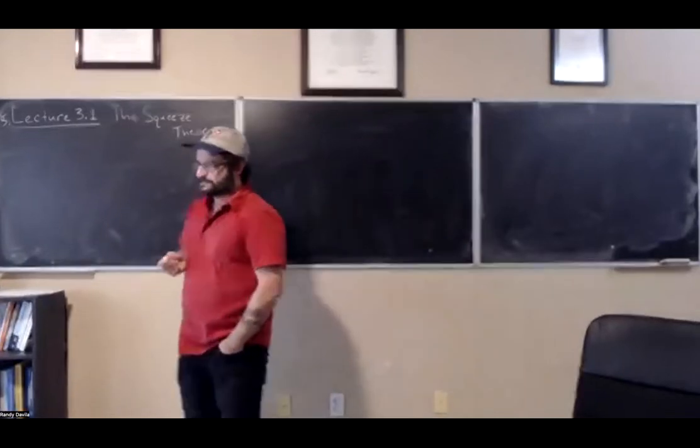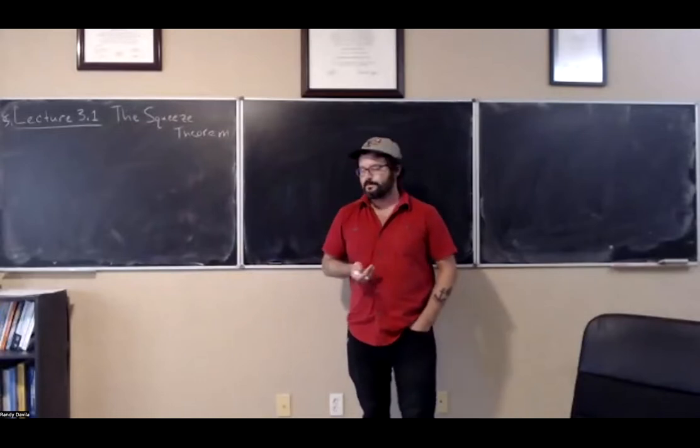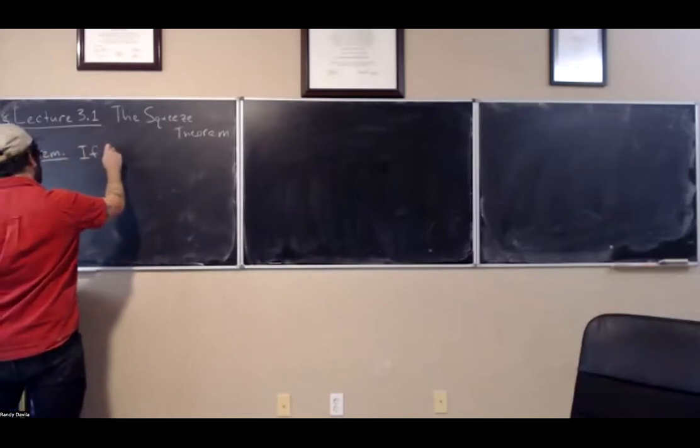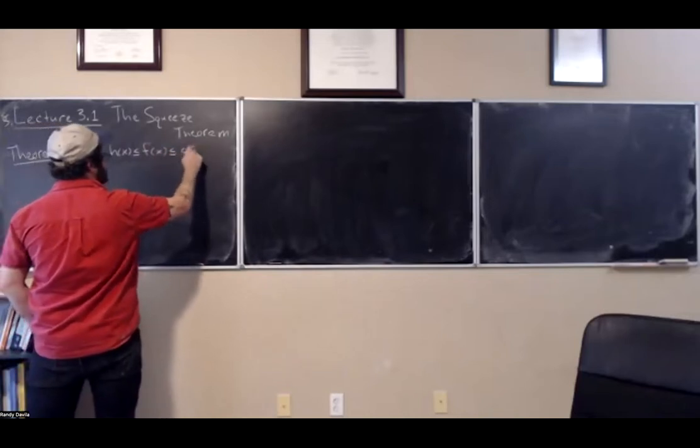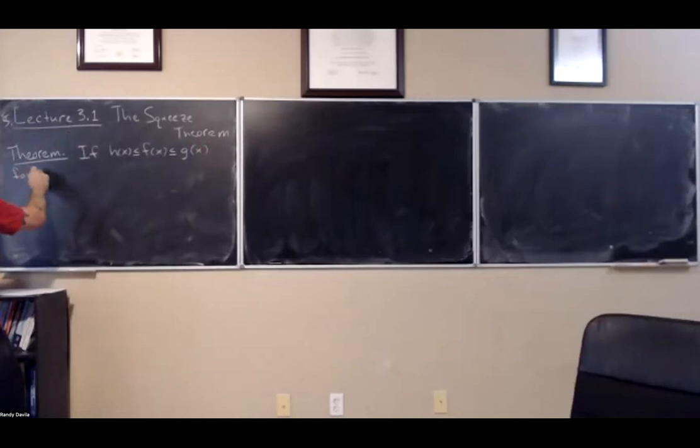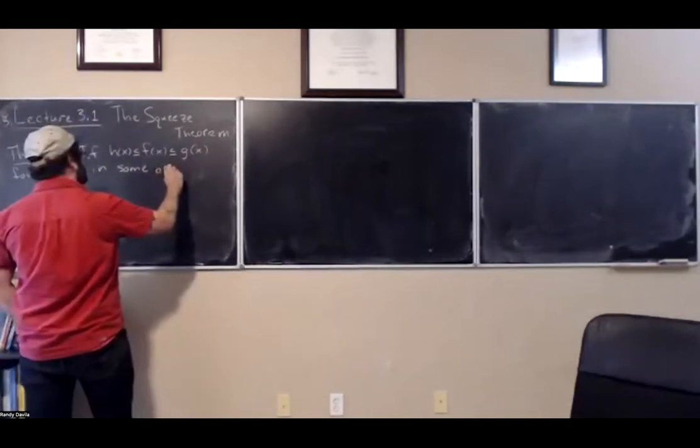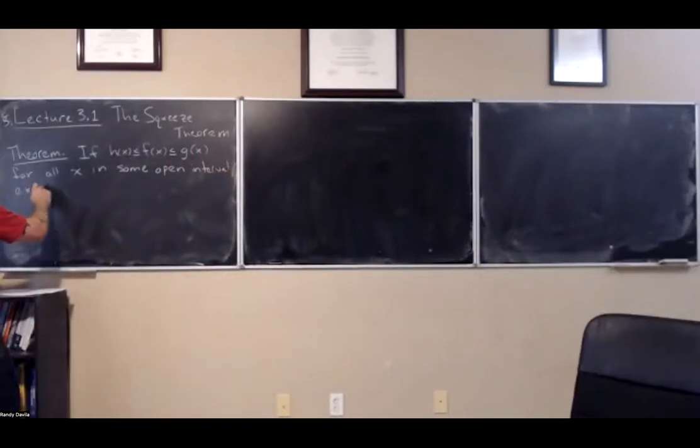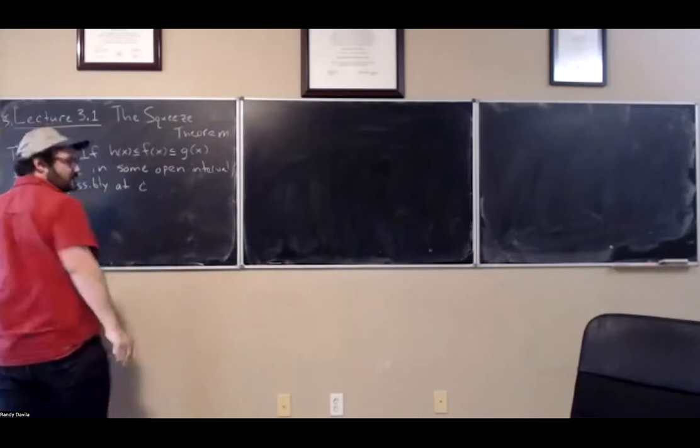This is a rather famous theorem in calculus one courses for evaluating limits that you cannot evaluate analytically, like just plugging in. And here's the statement. Theorem: If h of x is less than or equal to f of x, which is less than or equal to g of x for all x in some open interval, except possibly at c, some real value c.